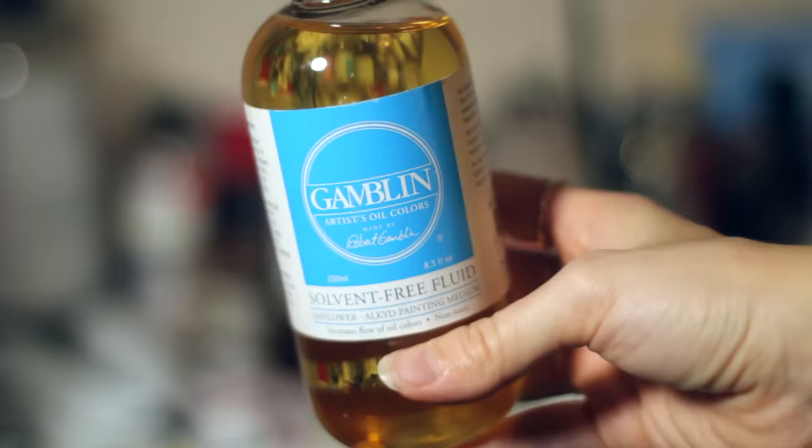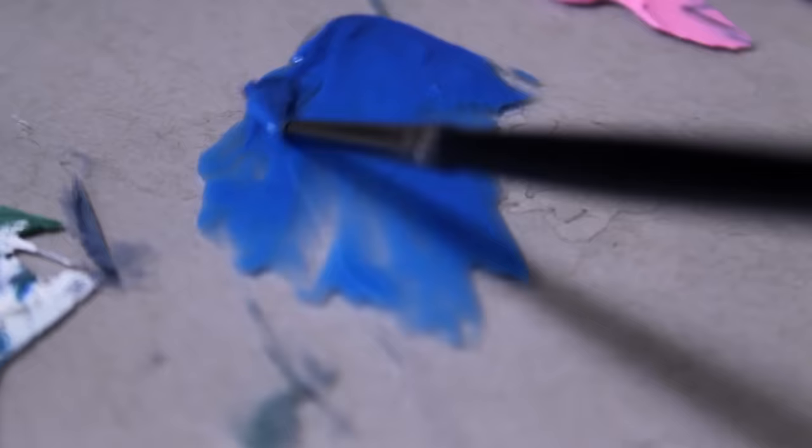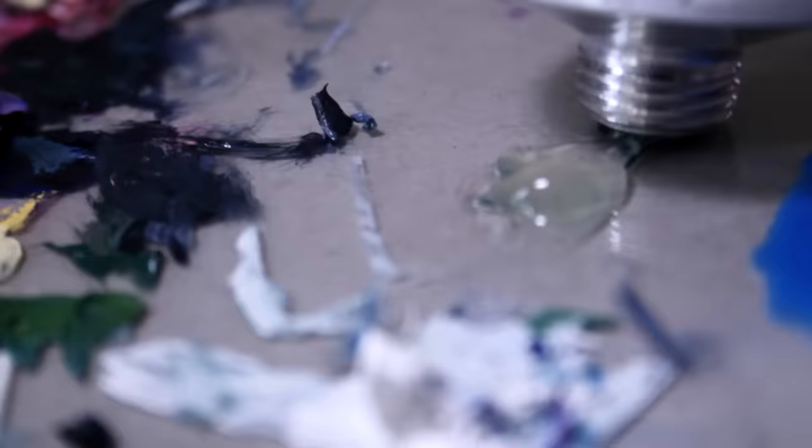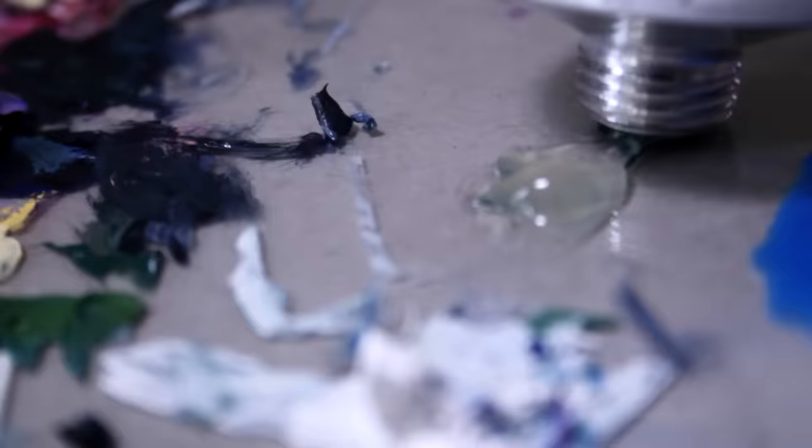I'm going to show you some examples of a few of these and how they work. If you're concerned with toxicity, Gamblin has a completely non-toxic solvent-free fluid made from safflower oil and alkyd resin. It improves the flow of the paint, speeds up drying time, and increases gloss.